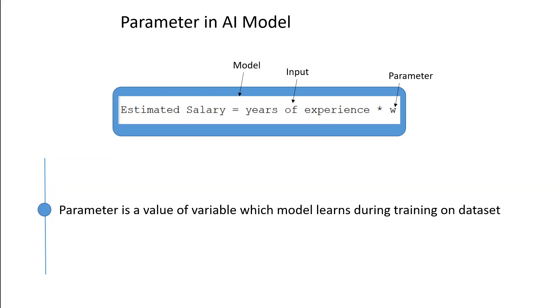Or in other words, a parameter in a machine learning or foundation model is a value that the model adjusts or learns from the data during training to make accurate predictions on new unseen data.